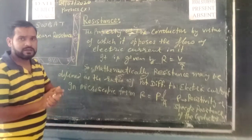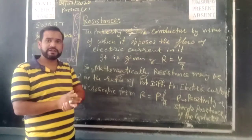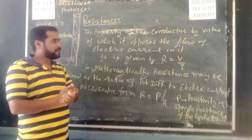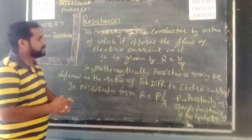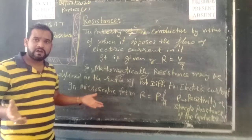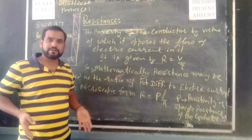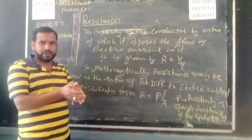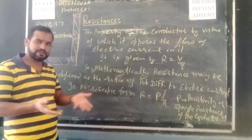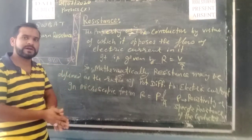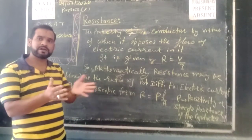You know what a conductor is. A conductor is a substance which allows the electric current to pass through it — this means the electric current passes through the conductor.